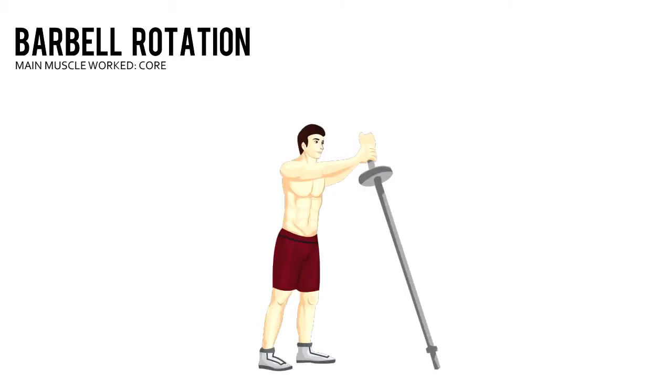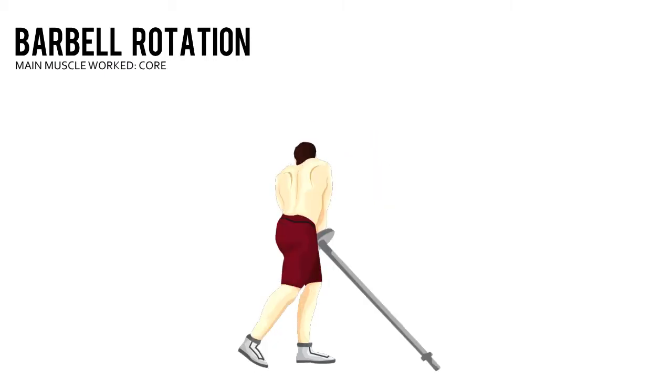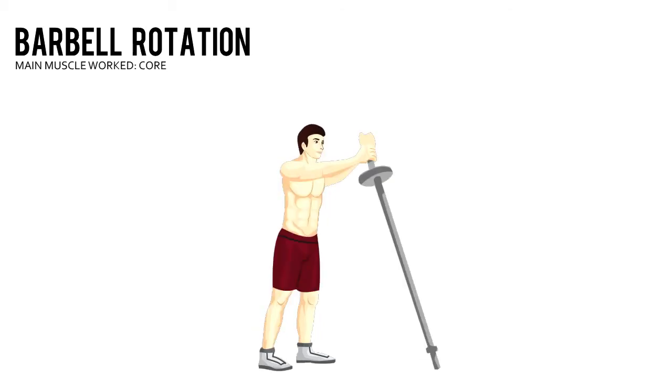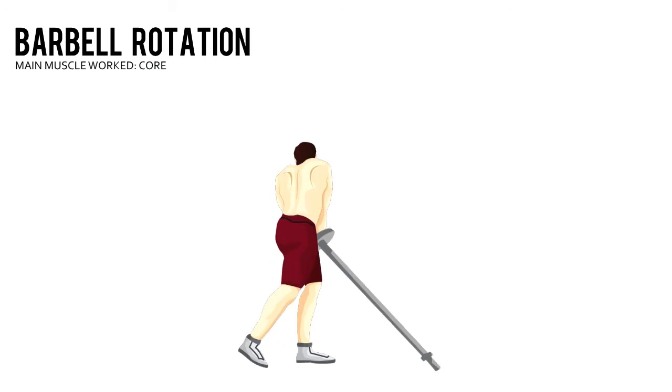Pivot your feet and torso simultaneously to move the top of the bar down and to your left side. Lift the bar up and down towards your other knee. That's one repetition.